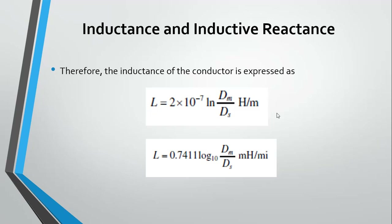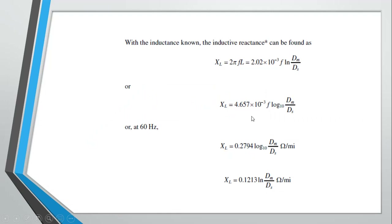The expression related to the inductance formula is derived in the textbook of power transmission. Another form of the formula is L = 0.7411 · log₁₀(D_M / D_S) mH/mile — note the above formula is in H/m. In order to measure X_L, we multiply L by 2πf, giving the inductive reactance X_L.